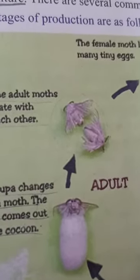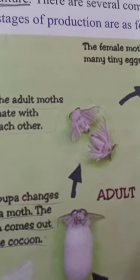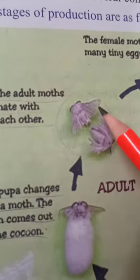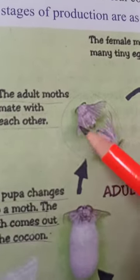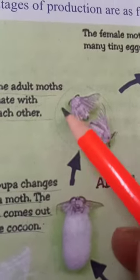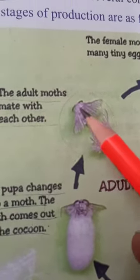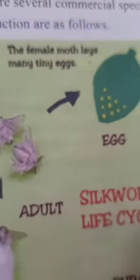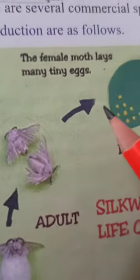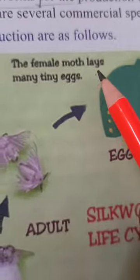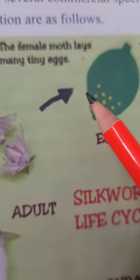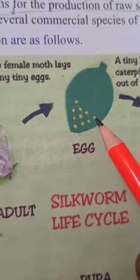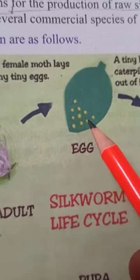Let's study the life cycle of silkworms and how they make silk fibers. The adult silk moth — male and female — when they mate, they are able to produce eggs. After mating, the female moth lays many tiny eggs.